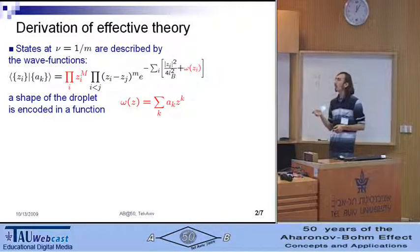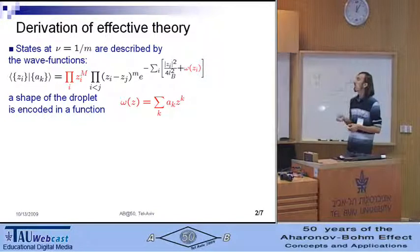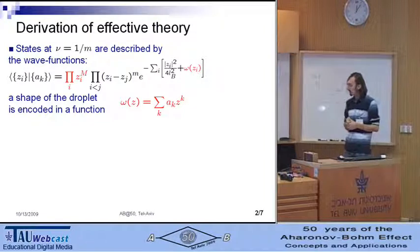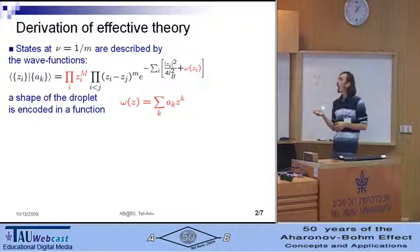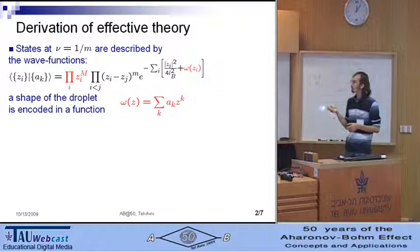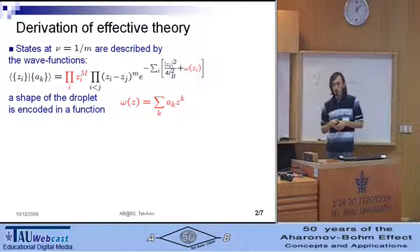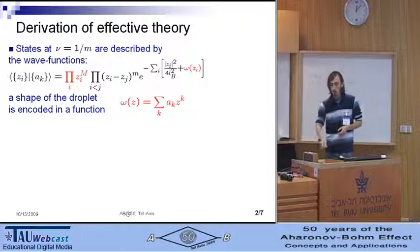For the filling factor one over m, the state of electrons is described by the wave function shown here, whereas part of the wave function shown here in red describes the shape of the region where the electrons are present. Such states form a subset of incompressible gapless deformations of quantum Hall liquid.